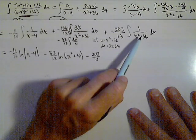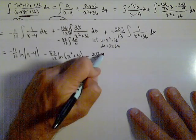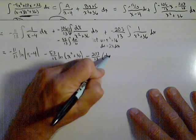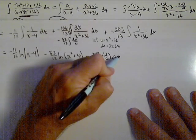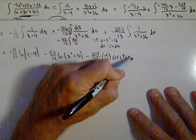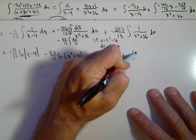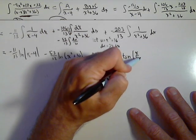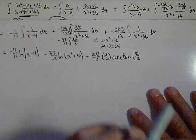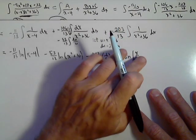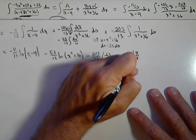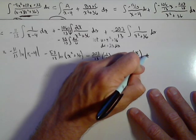we need to put a 1 over the square root of 36 out front. So 1 over 6 arctan of x over the square root of 36. My apologies. That should be the square root of 36 which is 6 with a plus C.